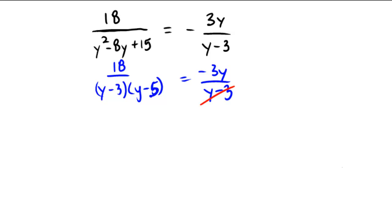So again, convenient cancellation. But now we need to remember that y cannot be 3. So if I end up getting an answer of 3, I have to neglect that one and pretend it didn't exist because it's an extraneous solution.